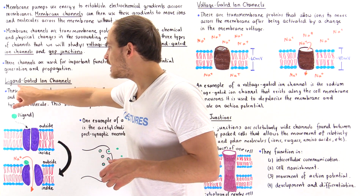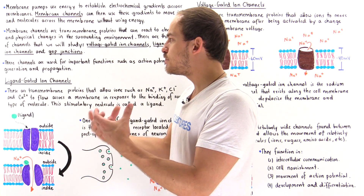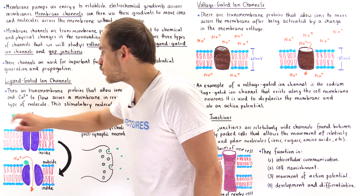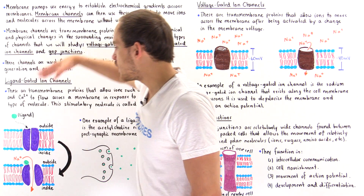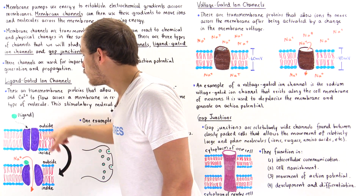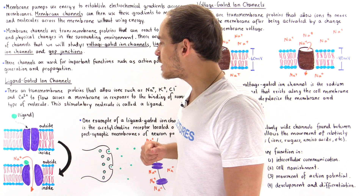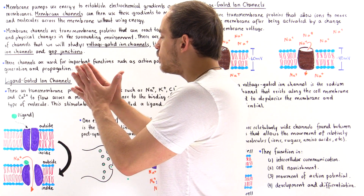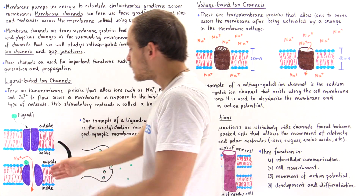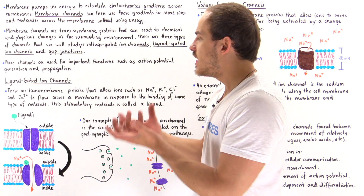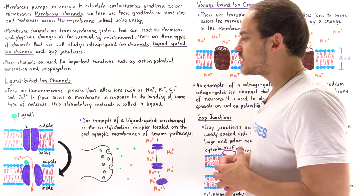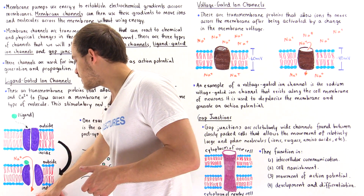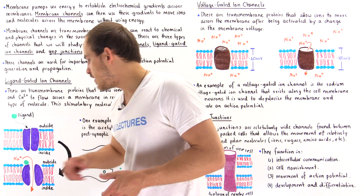Ligand-gated ion channels respond to the binding of a special type of molecule. Once that molecule — the ligand — binds onto the outer portion of this transmembrane protein, it causes a conformational change that opens up the internal pocket of that transmembrane protein. Then some type of ion can flow across the membrane from one side to the other — in this case, from the outside to the inside of the cell, such as a sodium ion.